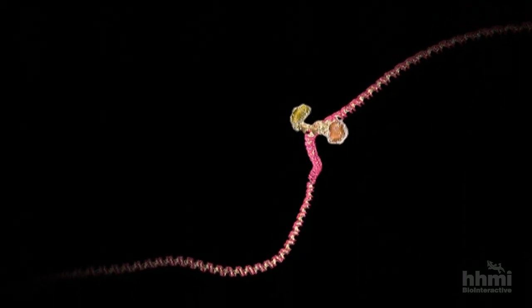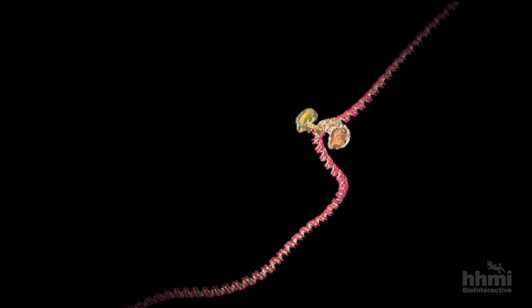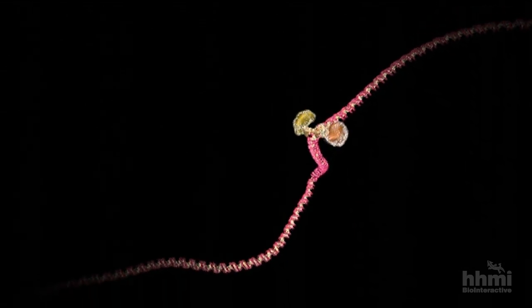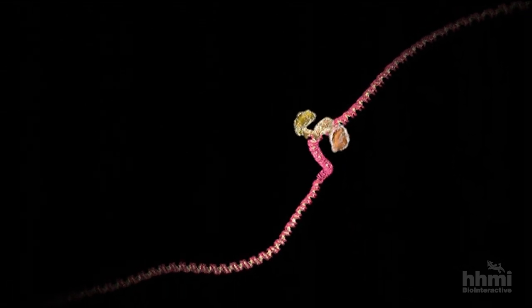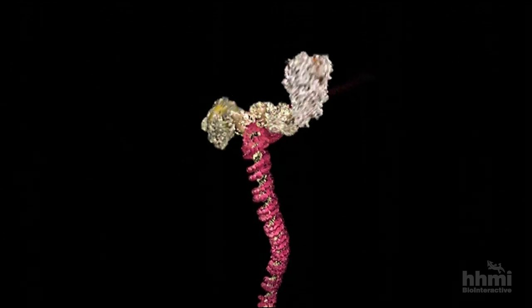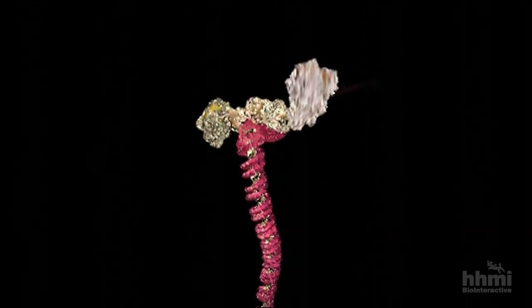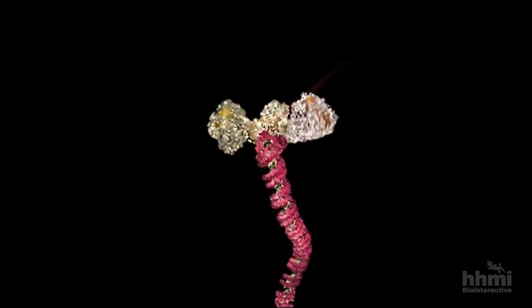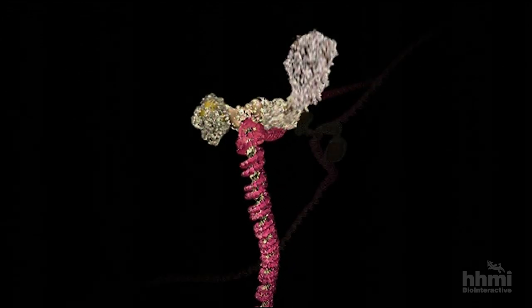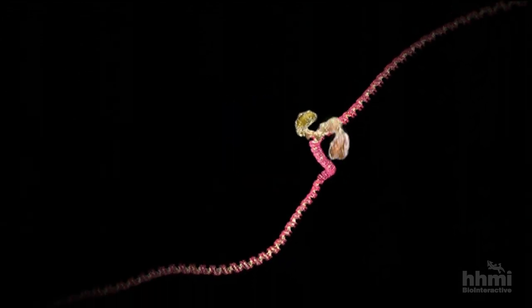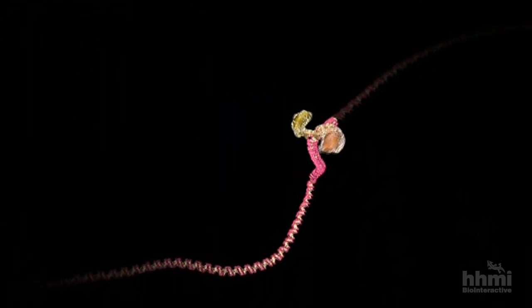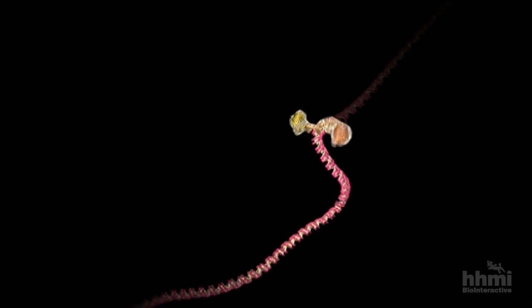The central dogma of molecular biology: DNA makes RNA makes protein. Here the process begins. Transcription factors assemble at a specific promoter region along the DNA. The length of DNA following the promoter is a gene, and it contains the recipe for a protein.